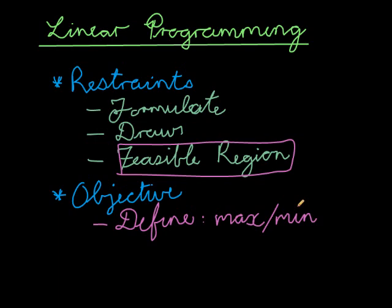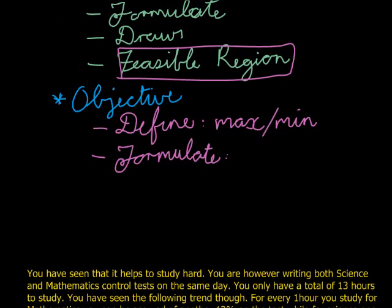Exactly. Time, money, there can be various things. That is to define. Next you'll have to do is formulate. Formulate refers to writing a formula. So now that you know that you want to maximize income or minimize expenses, you're going to write a formula for expenses or income, things like that.